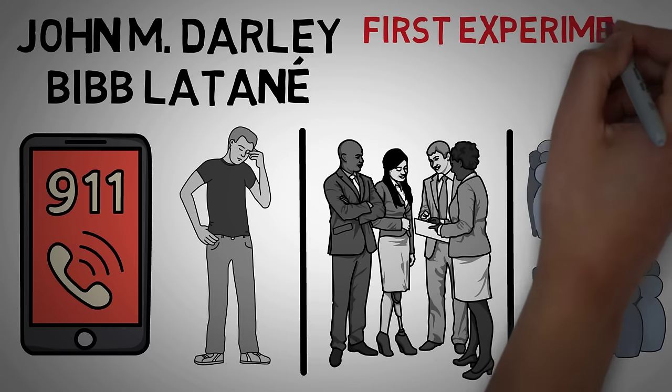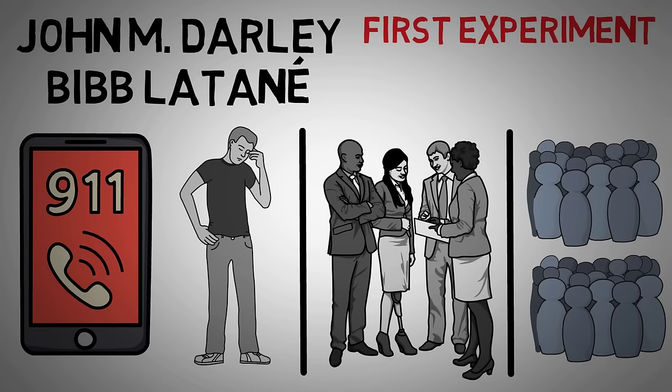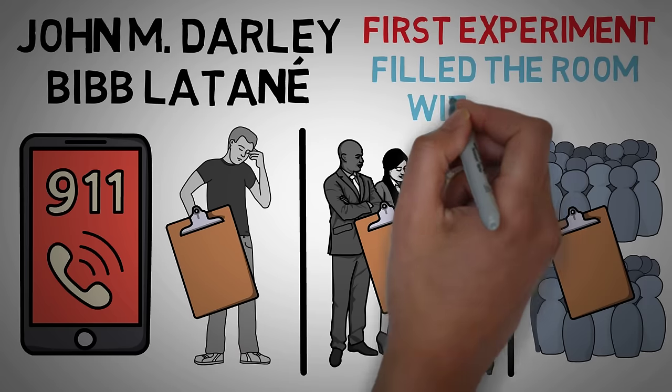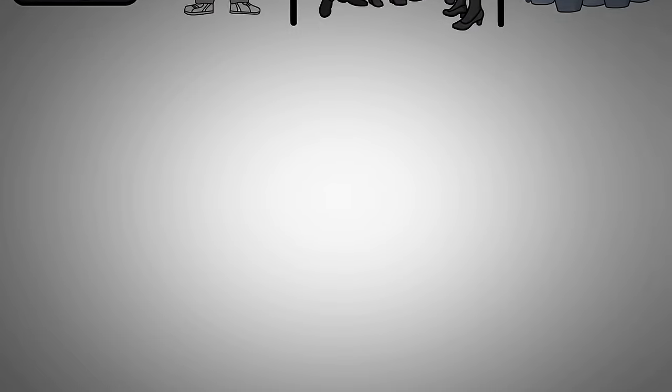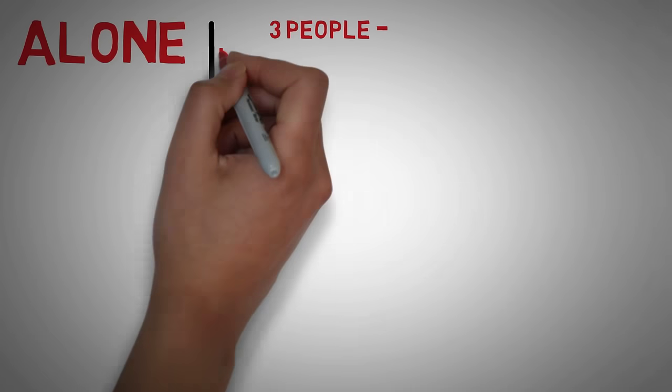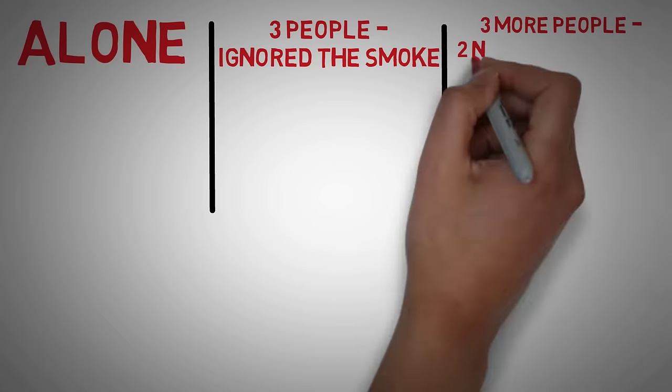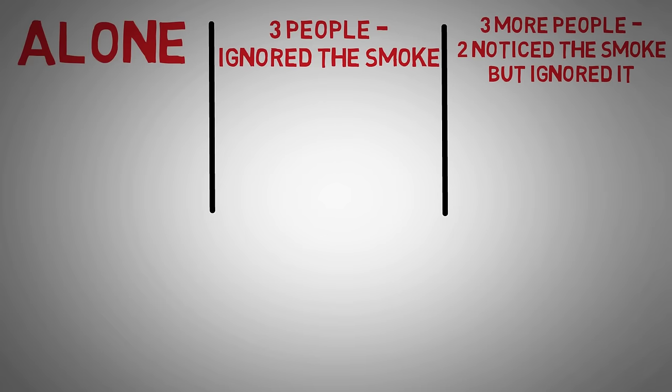Take their first experiment. The researchers gave the subjects a questionnaire to fill out in a room. They then left the room and began to fill it with smoke. In one room, the subject was entirely alone. In another room, three people sat in a room and ignored the smoke. And in the last room, three more people sat in the room, and two visibly noticed the smoke and ignored it.